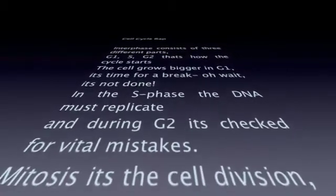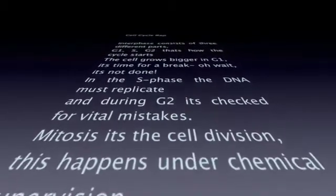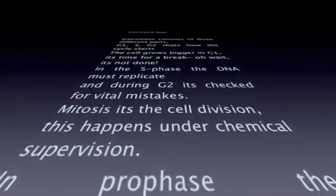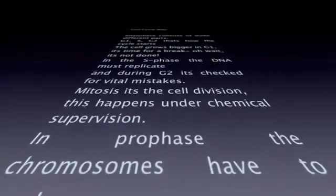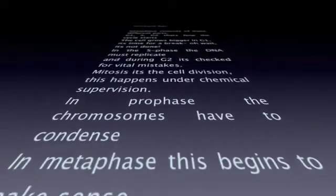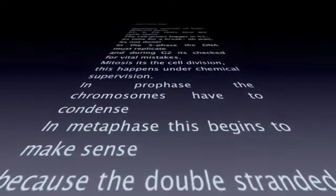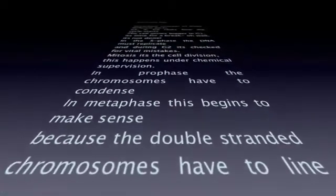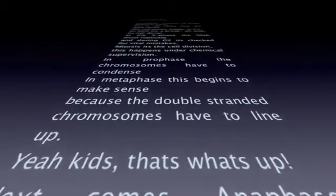And during G2, it's checked for vital mistakes. Mitosis — it's a cell division. This happens under chemical supervision. In prophase, the chromosomes have to condense. And metaphase begins to make sense, cause the double-stranded chromosomes have to line up.